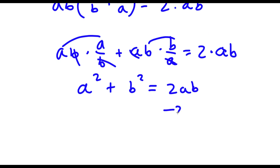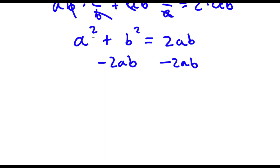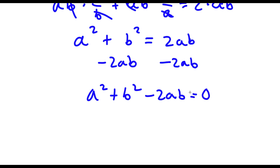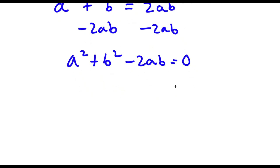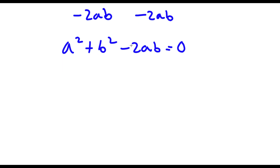Now I'm going to go ahead and subtract 2ab on both sides. So I have a squared plus b squared equals 2ab, and after subtracting I get a squared plus b squared minus 2ab is equal to 0. Now a squared plus b squared minus 2ab is actually the same thing as a minus b squared.